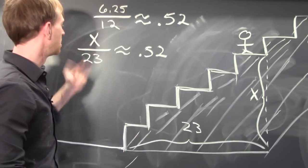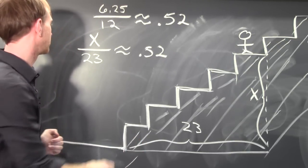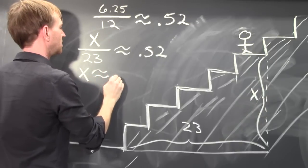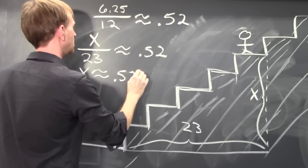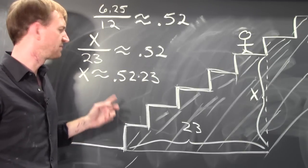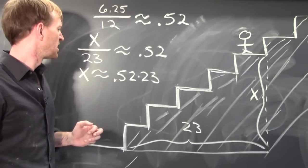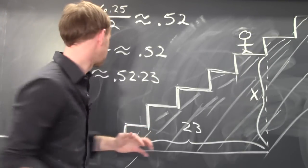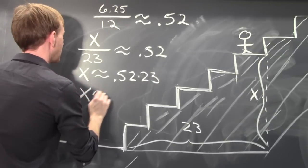Solve for x. Multiply both sides by 23 and we get x is approximately .52 times 23. .52 times 23 is 11.96.